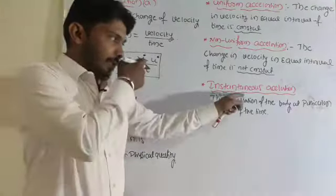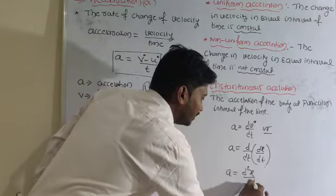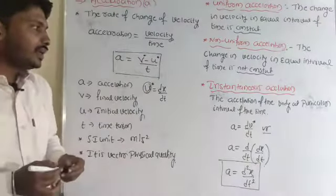What is instantaneous acceleration? a equals dv/dt. Another form: since velocity equals dx/dt, acceleration is differentiation of velocity, so a equals d/dt of (dx/dt), which gives d²x/dt². This is also the expression for instantaneous acceleration — the acceleration of the body at a particular interval of time.